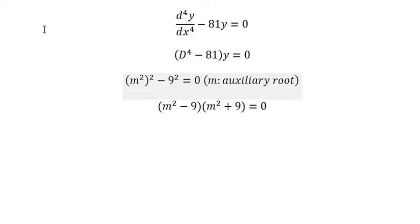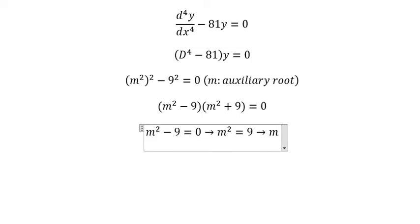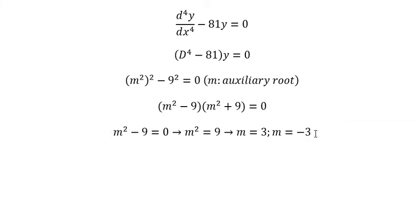So we have four solutions. The first one: m squared minus 9 equals to zero, so m squared equals to 9, so m equals to 3 or m equals to negative 3. And the second one: